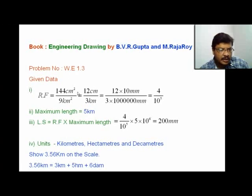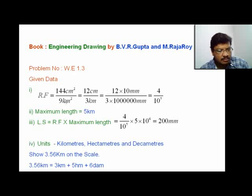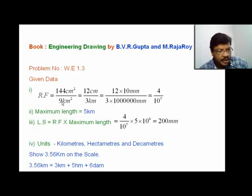Now see this diagonal scale problem. In this problem the RF value is not directly given — you have to calculate it. The information is given as follows: on the map, an area of 9 km² is represented as 144 cm². That means on the drawing the area is 144 cm² and the actual area is 9 km².